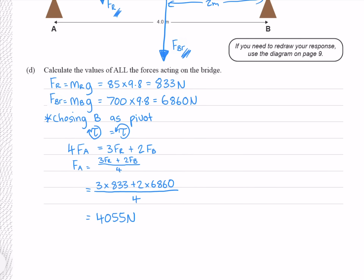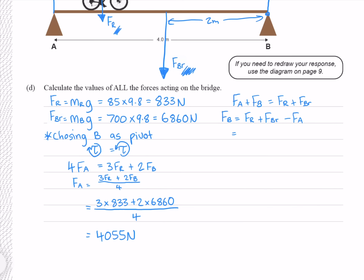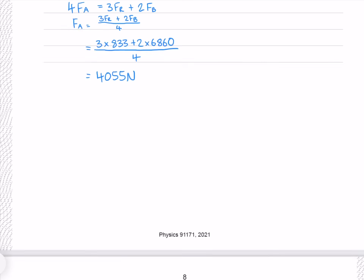To find the force from support B, we don't need torques — we just balance the forces. Our two upward forces FA and FB must equal the downward forces. Solving for FB by subtracting FA from both sides, and putting our numbers in, gives me 3638 newtons. And we're done.